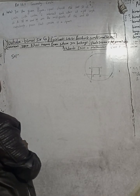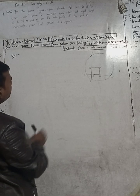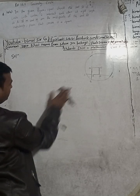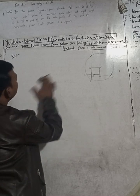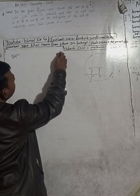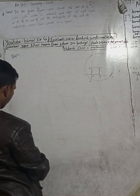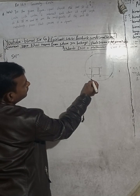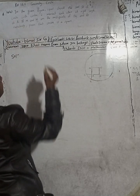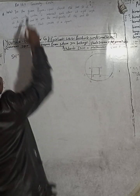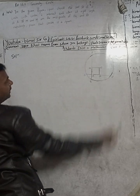Welcome back, class 9 and 10 students. In this cold season, I am here to warm up your days and nights with exciting content. Let's do question number 10b, Exercise 16.1 — Geometry: Circle — from Vedat Excel in Mathematics, Class 9.